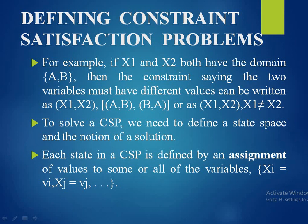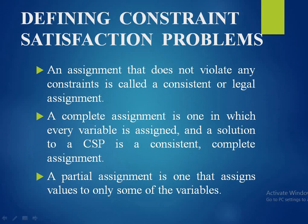Each state in a CSP is defined by an assignment of values to some or all of the variables. An assignment that does not violate any constraints is called a consistent or legal assignment. A complete assignment is one in which every variable is assigned, and a solution to a CSP is a consistent complete assignment. A partial assignment is one that assigns values to only some of the variables.